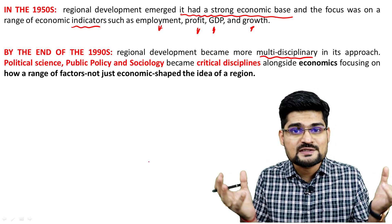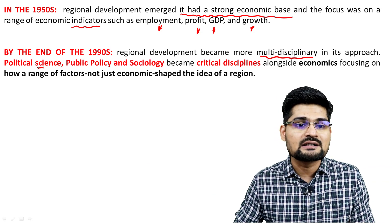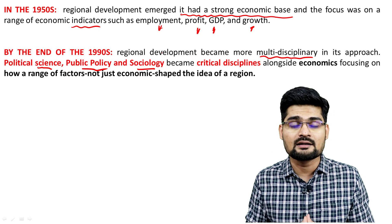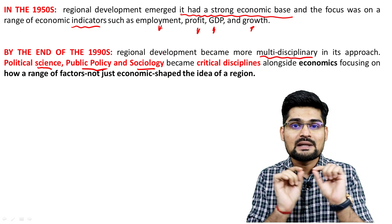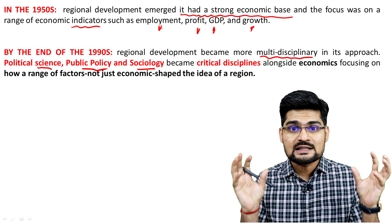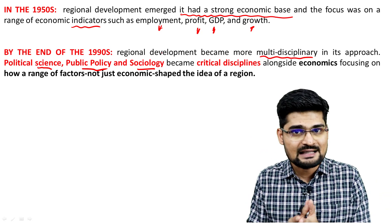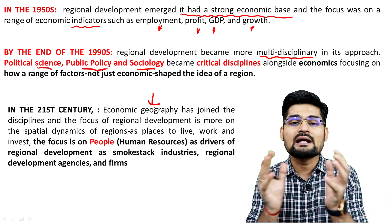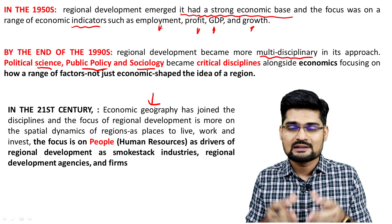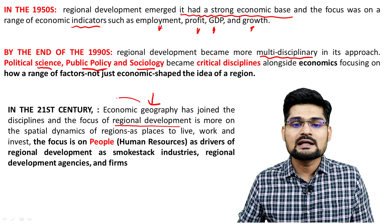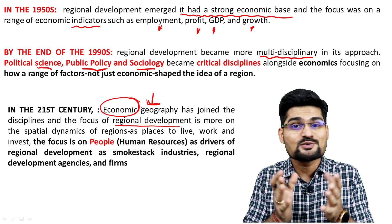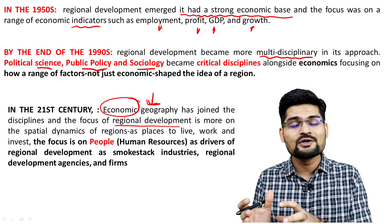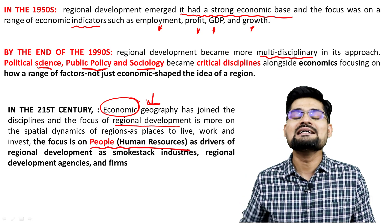Which disciplines added their knowledge to the development process? Political science, public policy, and sociology were very critical disciplines across the world and India that started talking about making strategies for overall regional development. A constructive idea of a region through multiple disciplines started then. Now in the 21st century, we see the rise of economic geography, which added the geographical dimension — spatial economics — shifting from a nature-centric, resource-centric approach to a human-centric, human resource-based regional development strategy.